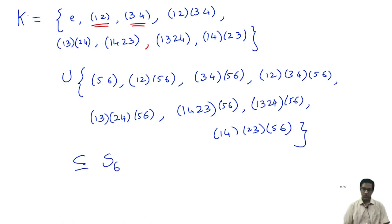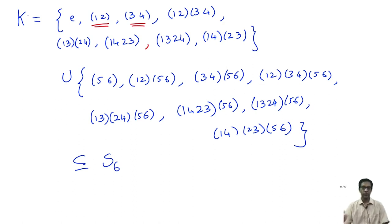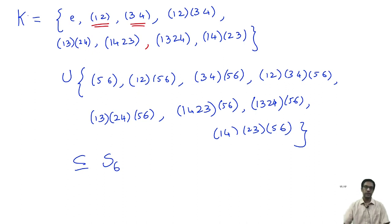As exercises: how many 2-Sylow subgroups does S6 have, and how do you determine all of them? I would encourage you to explore similar problems — try finding 3-Sylow or 5-Sylow subgroups for various symmetric groups. It is a very interesting exercise to see what sorts of permutations take control.